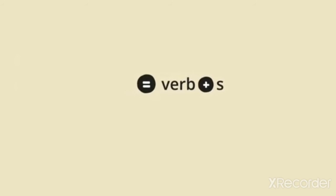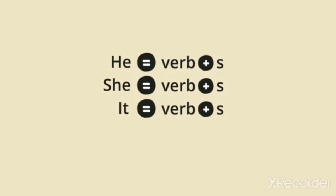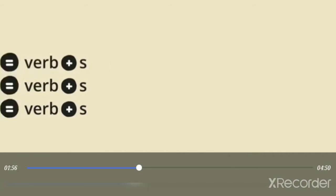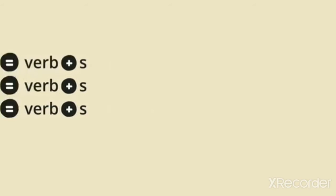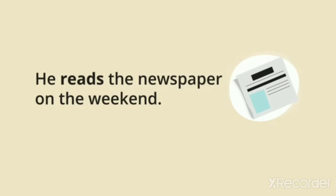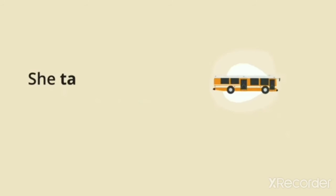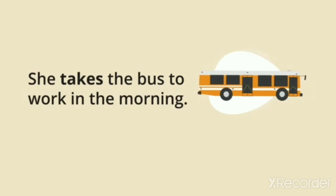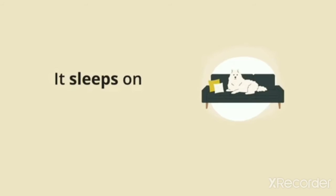When we are using verbs plus S, look at here — he, she and it. After he, she and it — any one person's name, any thing's name, any girl or boy — we are using the verb with S. For example: He reads the newspaper, 'read' with S added. She takes the bus to work in the morning. It sleeps on the couch every day.